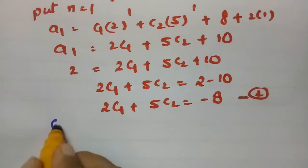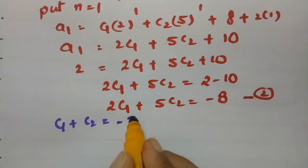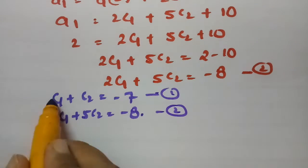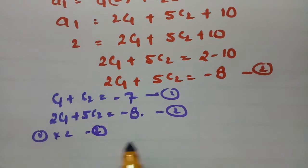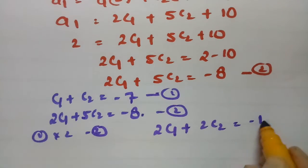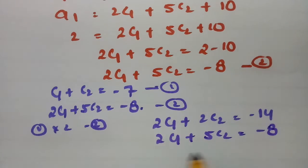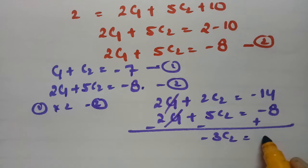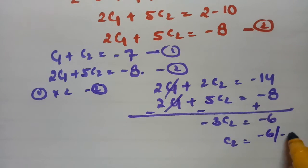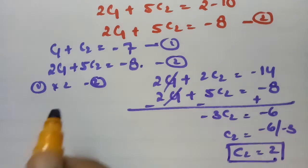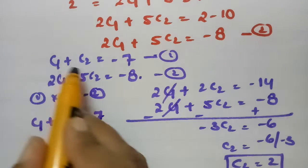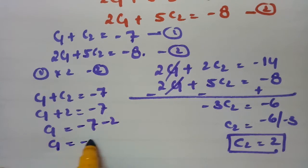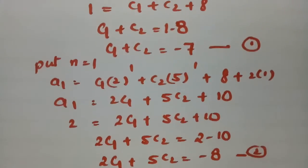Multiplying equation 1 by 2: 2C1 + 2C2 = -14. Subtracting from equation 2: (2C1 + 5C2) - (2C1 + 2C2) = -8 - (-14), giving 3C2 = 6, so C2 = 2. Substituting back into equation 1: C1 + 2 = -7, so C1 = -9.